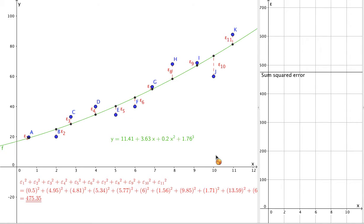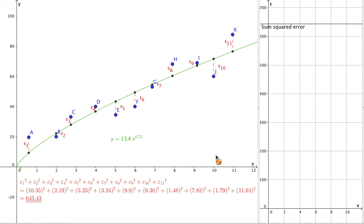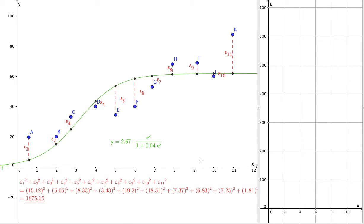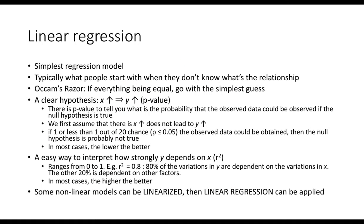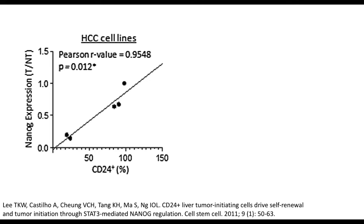The least-squares method is not only used in linear regression — it is also used in non-linear regression. Now you have some brief idea of what regression is. Let us start with the simplest case, linear regression. Linear regression is typically what people start with when they are not very sure about what the relationship between x and y is. By the famous Occam's razor, we scientists often go with the simplest guess if all things are equal. You will see linear regression a lot in scientific publications.